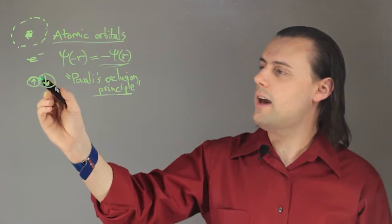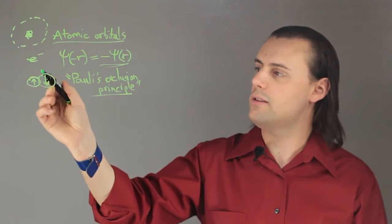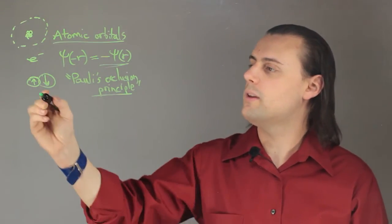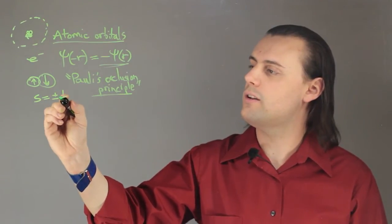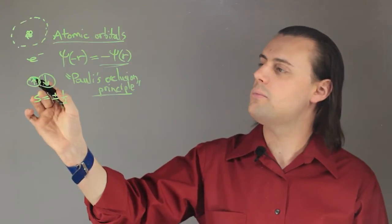And it means that only a certain number of these fermions, these half-integer spin particles, can occupy a certain orbital. So the spin quantum number can be either positive or negative one-half, which is represented pictorially here by spin up and spin down.